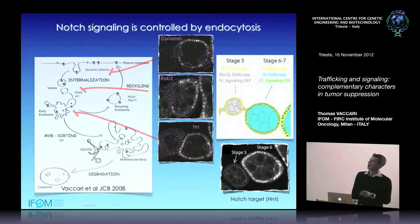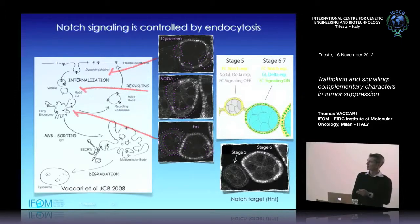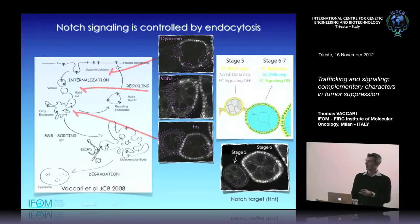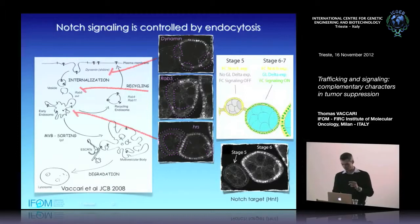When we blocked HRS, which is important for sorting cargoes into the internal luminal side of the endosome en route to degradation, there was no effect on activation of signaling. This suggests that once the receptor gets to the early endosome it can be activated in this cell type, and what happens later on is not really important — except for one set of mutants we ended up characterizing further.